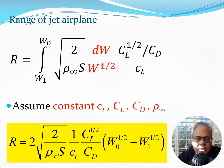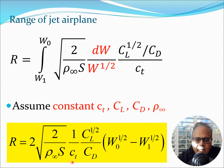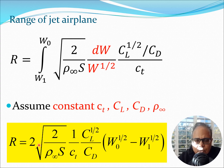Looking at the resulting equation, the W terms appear separately in red while ρ∞, S, CL, CD, and CT are the remaining terms. Assuming CT, CL, CD, and ρ∞ are all constants, they can be extracted from the integral, leaving an integral of W^(−1/2) dW. Integrating W^(−1/2) gives W^(1/2) divided by 1/2, which introduces the factor of 2. This yields a clean closed-form solution for the range of a jet airplane.